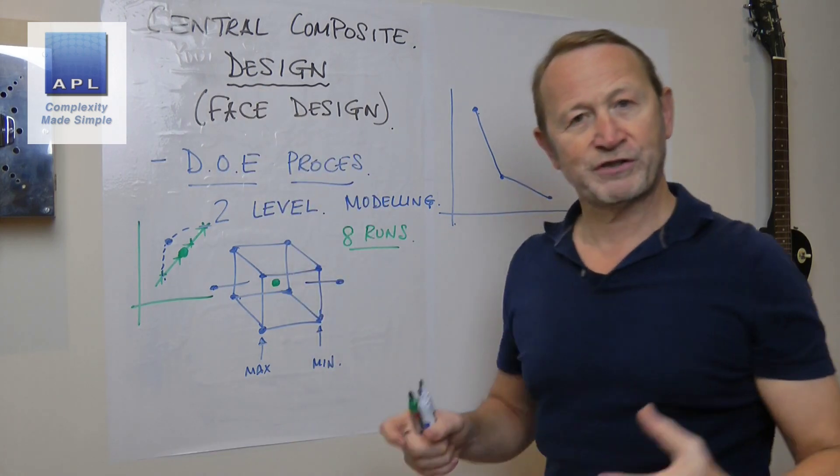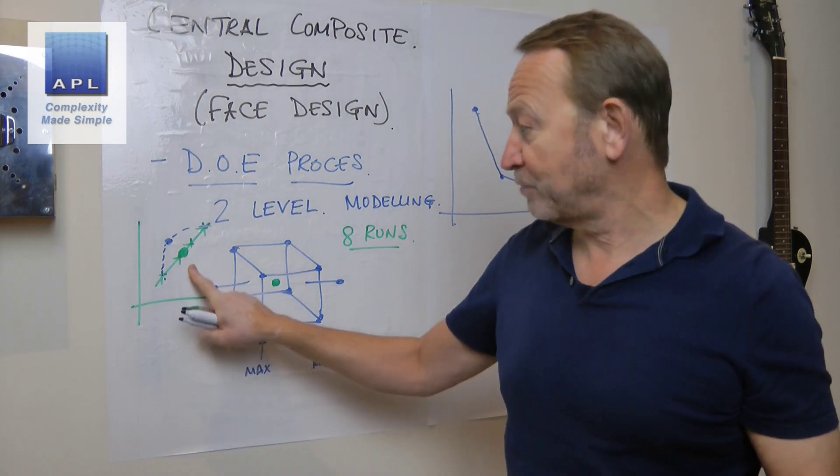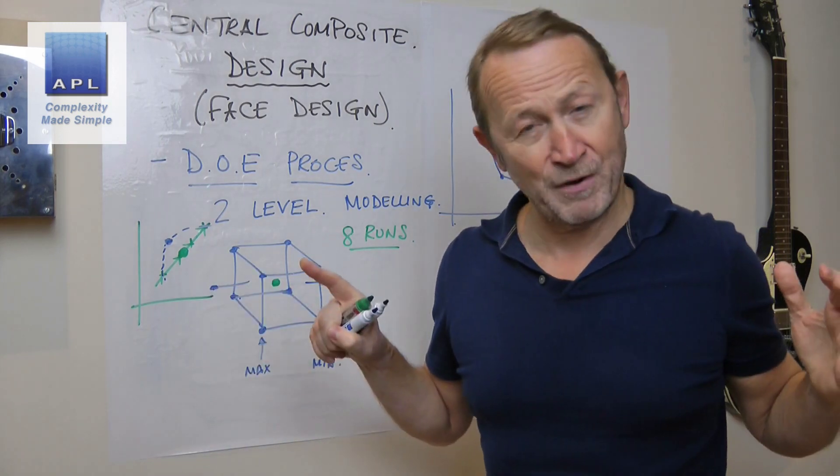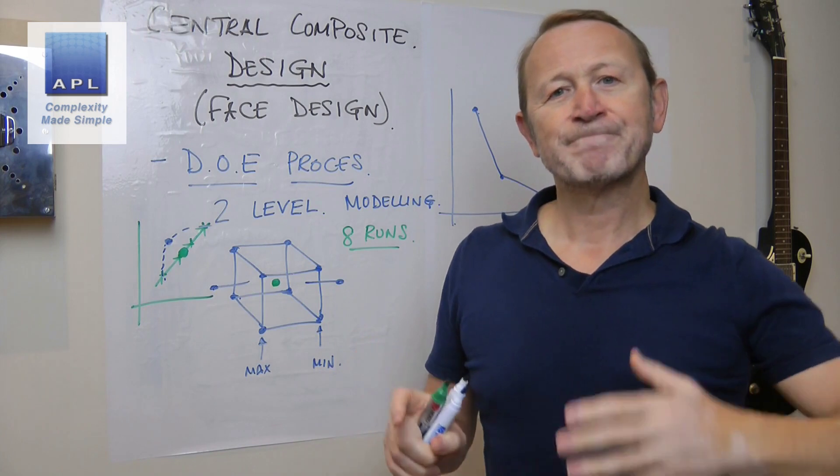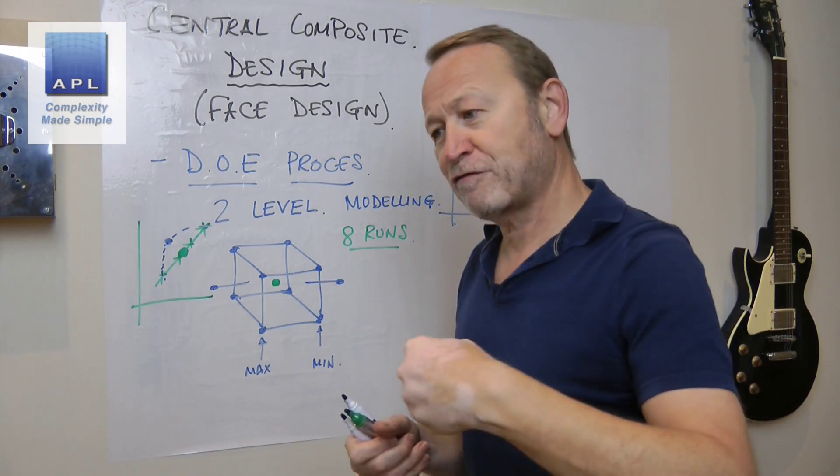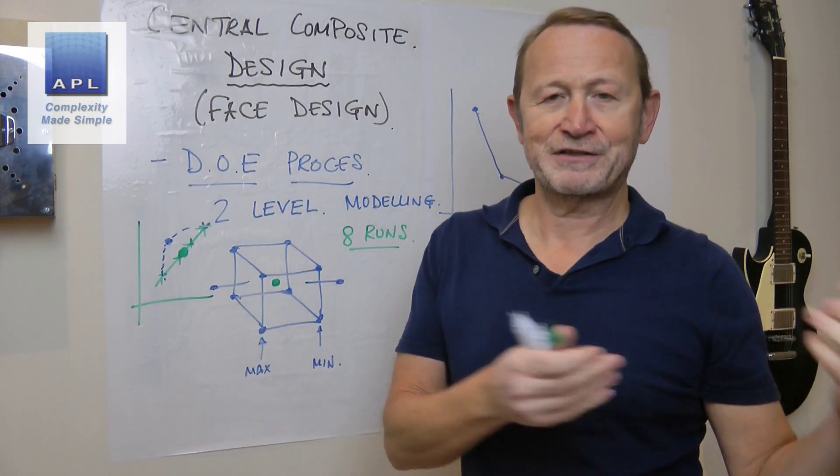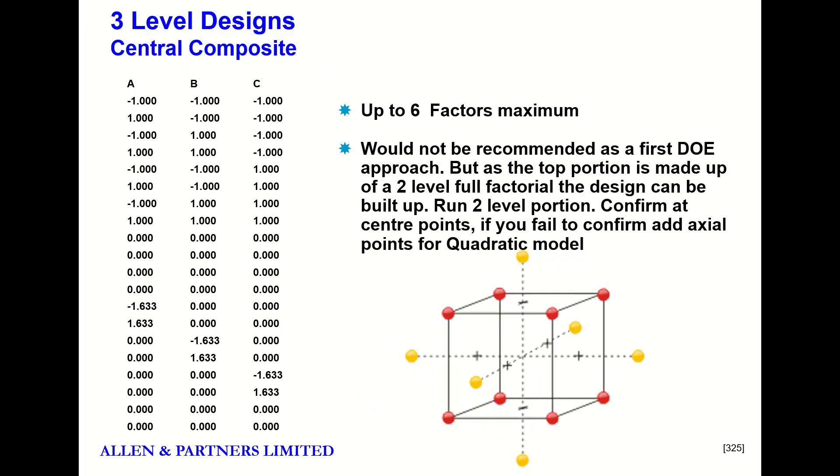Now, where do I come against the problem? So as far as I'm concerned, what's the bonus of the face design? I augment into it. I don't have to do it if I don't need to, because if I confirm here, I stop halfway down the experiment. So the face design is a super efficient way of doing a two level if that's all you have to do, but go in the minimum amount of data to get the maximum amount of information. And that's why I use the face design.